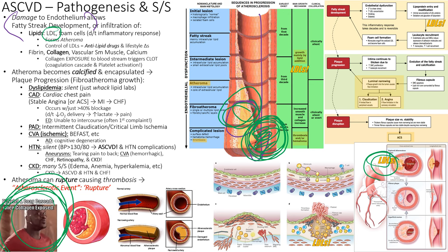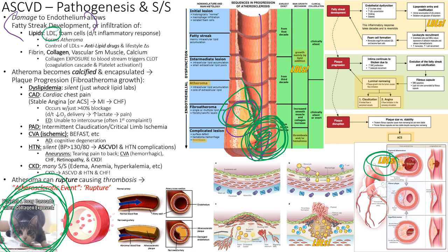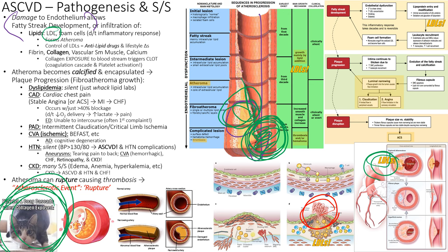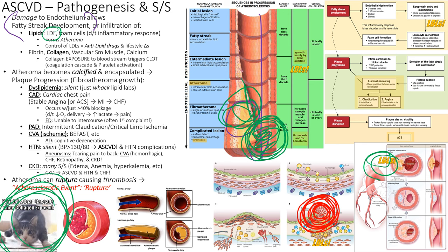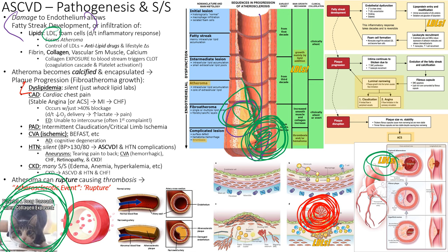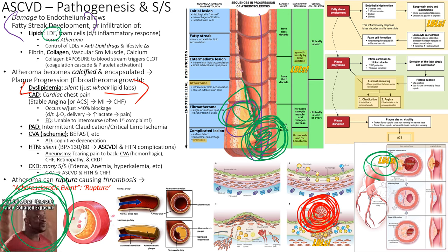The atheroma forms a fibrous cap that eventually thins and ruptures, exposing collagen. Collagen activates platelets and the coagulation cascade, forming a clot that 100% — or at least partially — occludes the vessel, causing an ASCVD event. Dyslipidemia ('whack lipids') is the starting point; once you survive an event, you get aspirin and a statin.